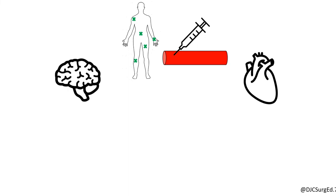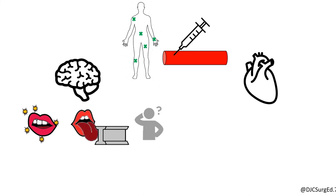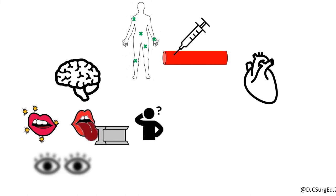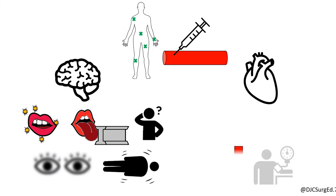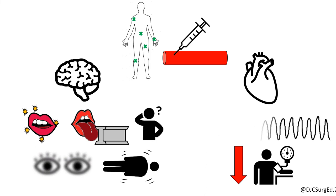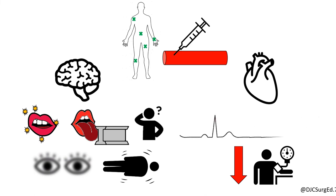CNS effects include perioral numbness, a metallic taste, mental status changes, visual changes, and ultimately seizures. Cardiovascular signs and symptoms include bradycardia and hypotension, and can progress to ventricular arrhythmias and/or asystole.